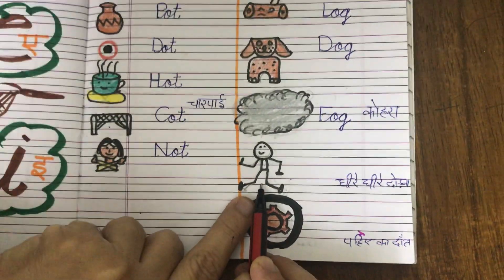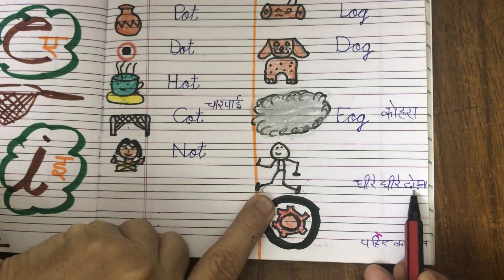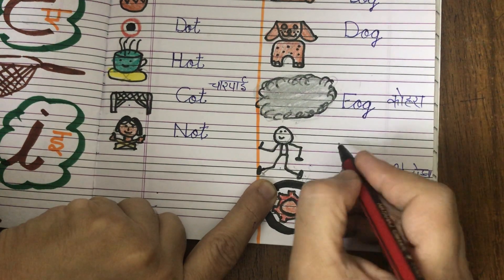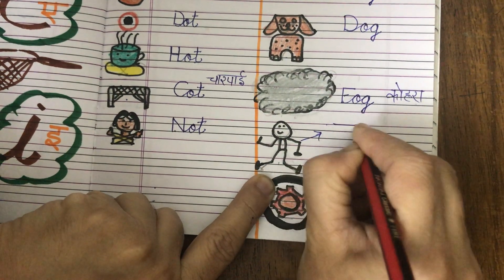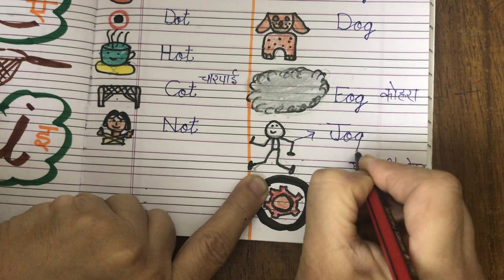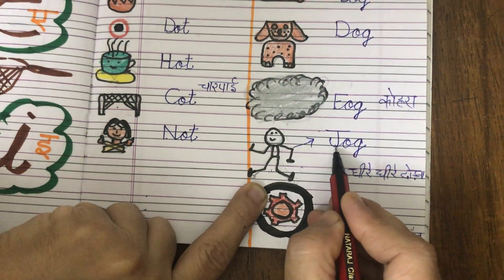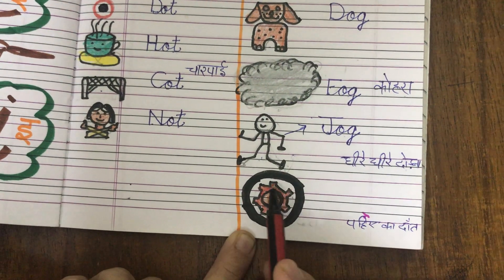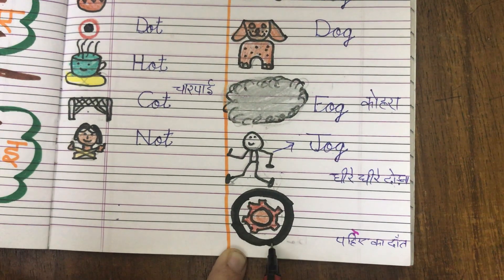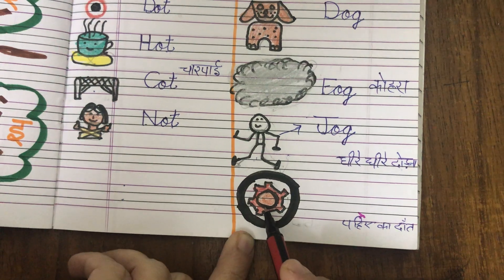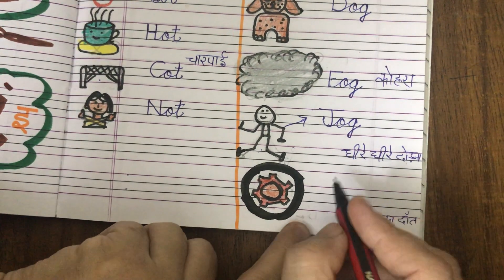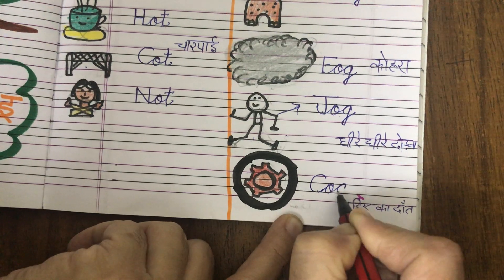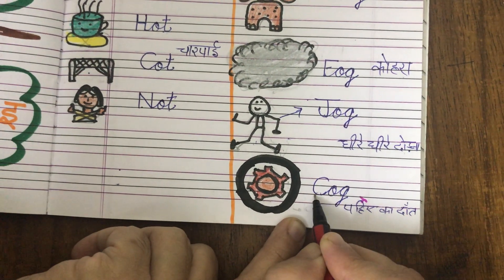This boy is doing jogging. Jho dhire dhire daudte hai na, ek toh bhot bhaagte ho tez tez — usko bolte hain run karna, running. But this boy is doing jogging. To we will write jog. Jog. Yeh dhekho yeh ladka kya kar raha hai — jog. Yeh dhekho. This is a wheel. Yeh joh wheel ke andar yeh part hai na, isko bolte hain cog. Issi ke andar wheel fasa hota hai. Isko bolte hain pahie ka dant. Isko bolte hain cog. Kuh, og, cog.